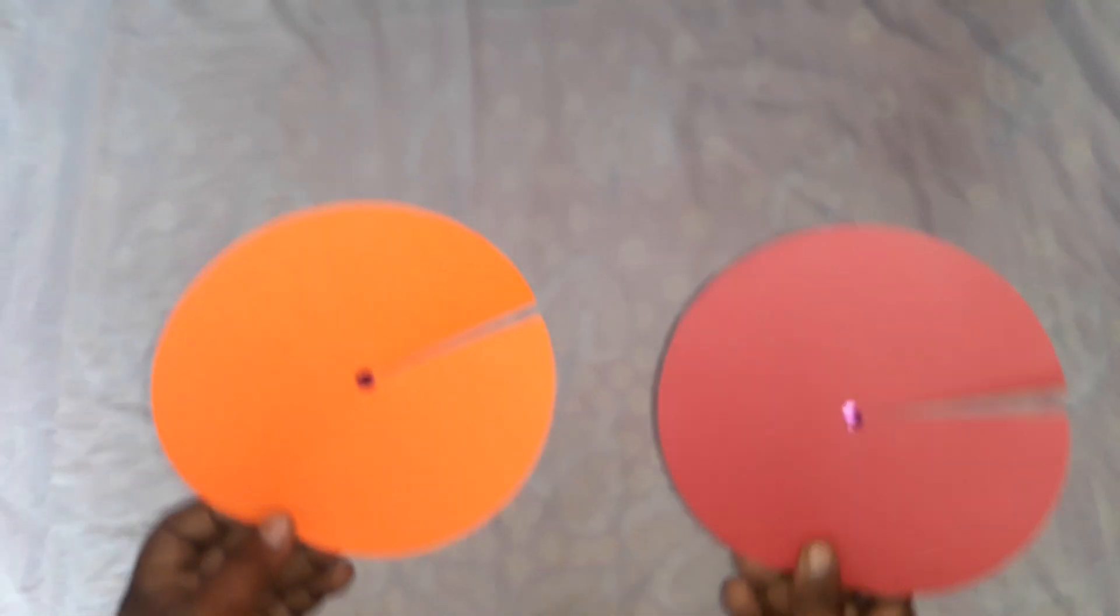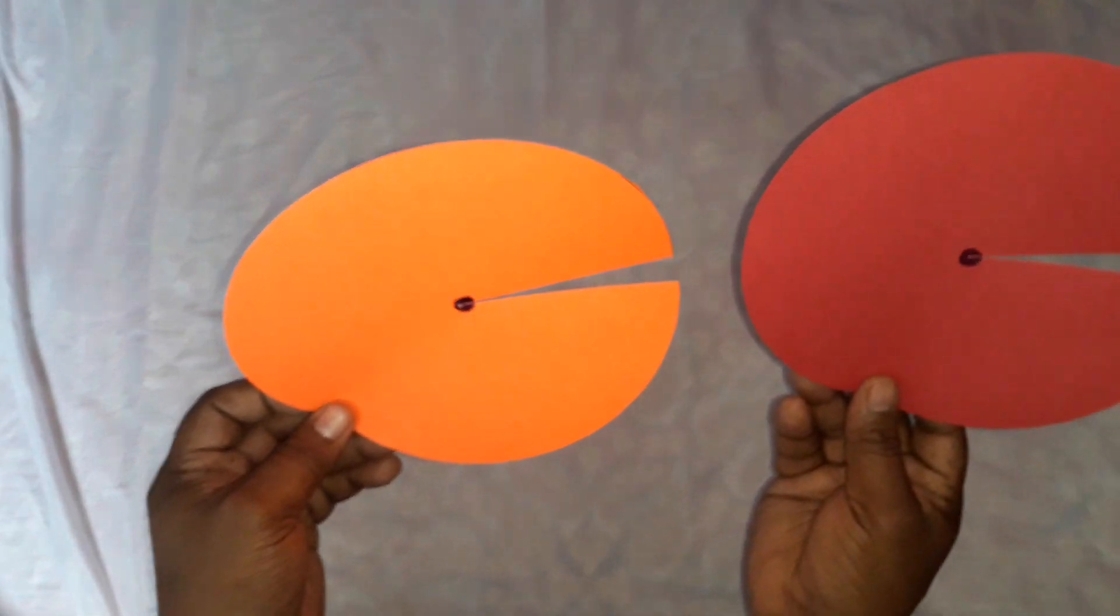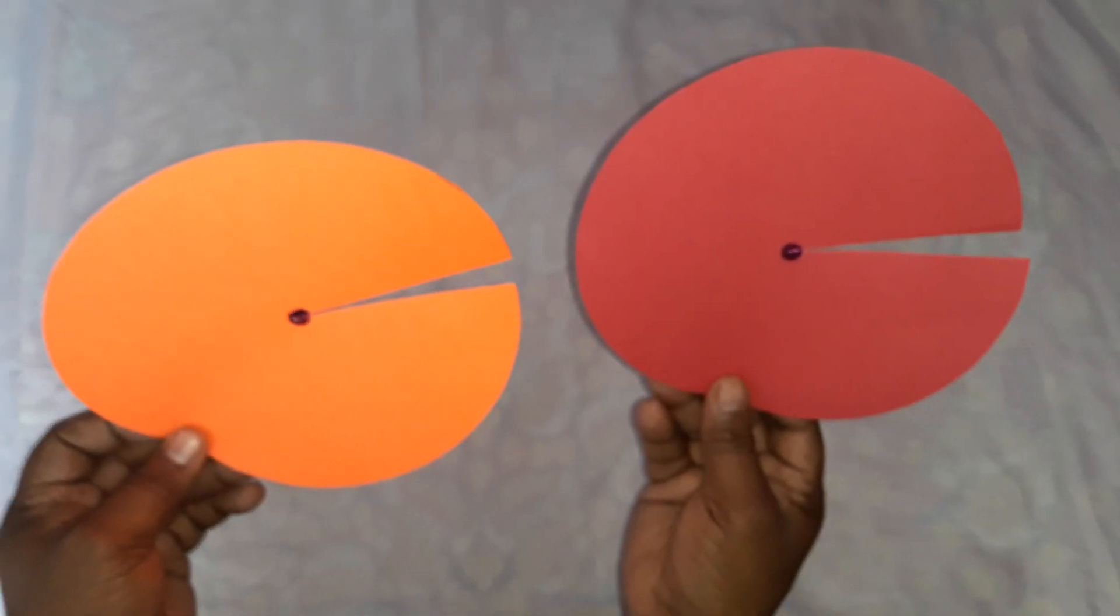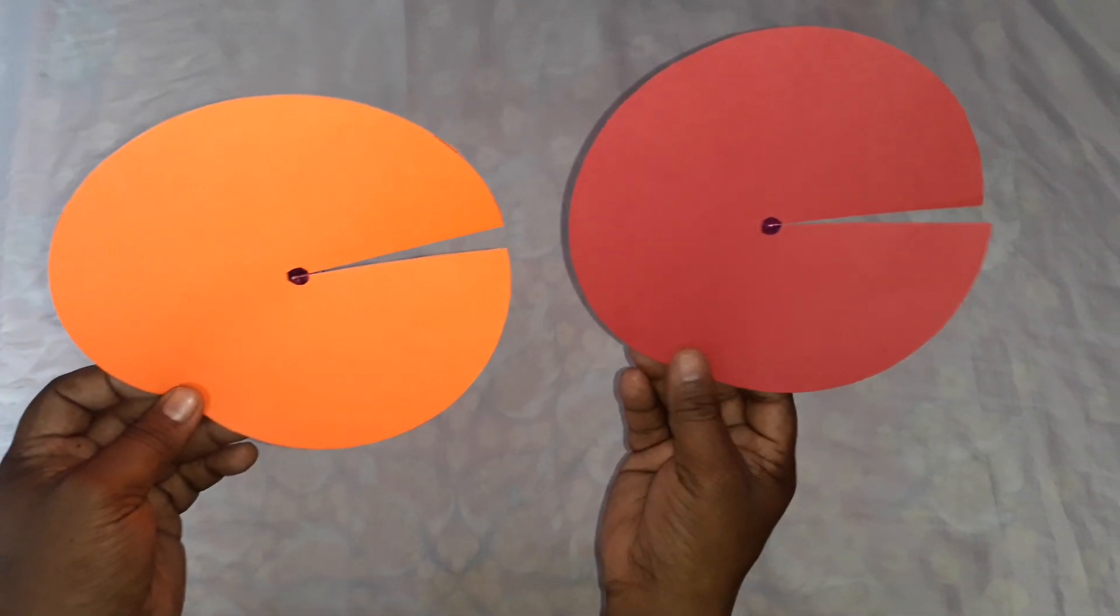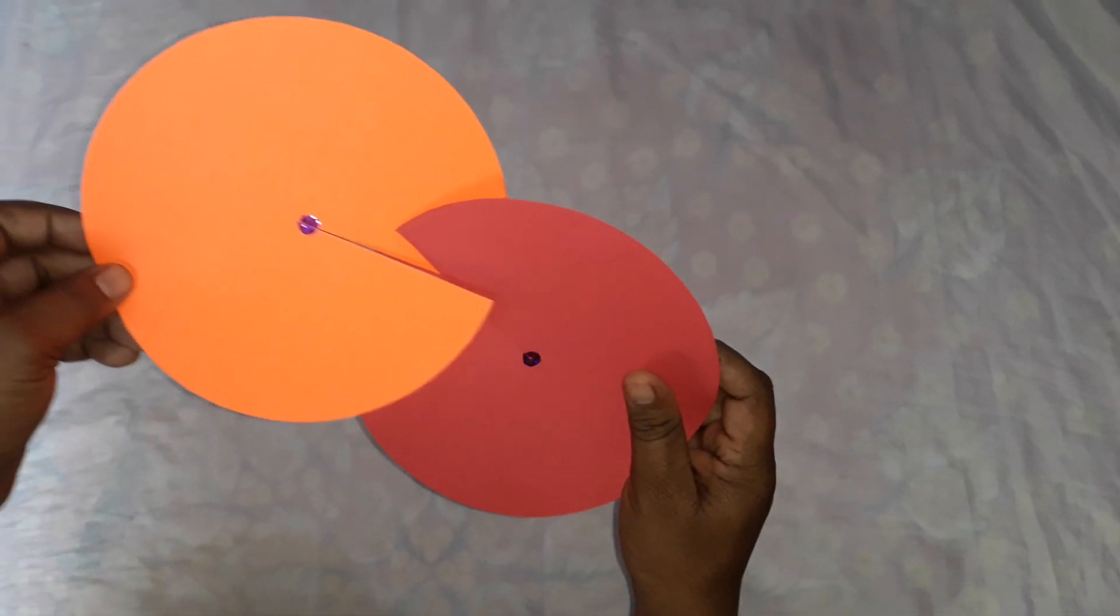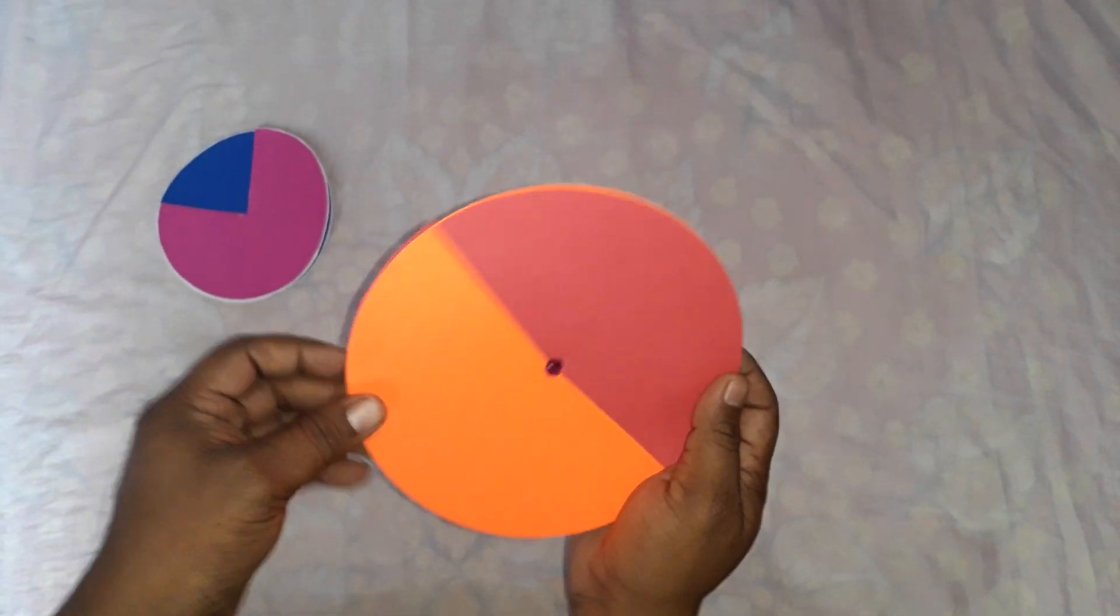Let us take two congruent circles. Congruent circle means their radii are same. I will join these two circles like this.